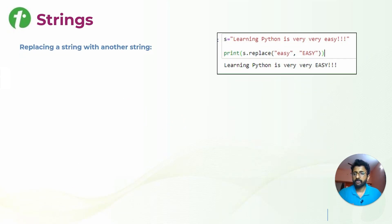Whenever you wanted to replace string with another, you have to use replace method. For example, in this particular line of string, you wanted to replace easy with easy, you just have to write s dot replace.